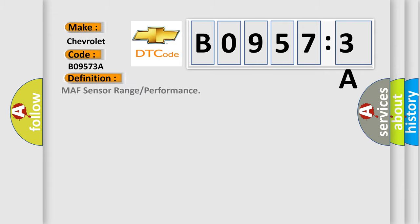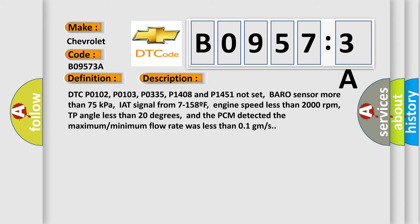The basic definition is MAF sensor range or performance. And now this is a short description of this DTC code. DTC P0102, P0103, P0335, P1408 and P1451 not set.